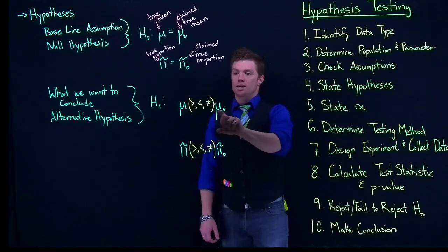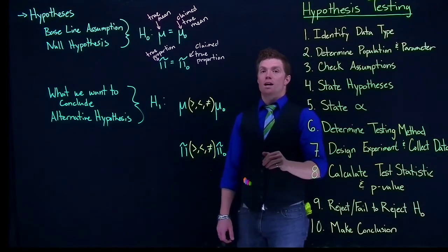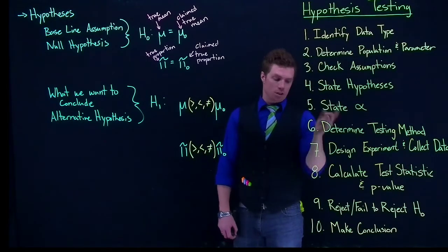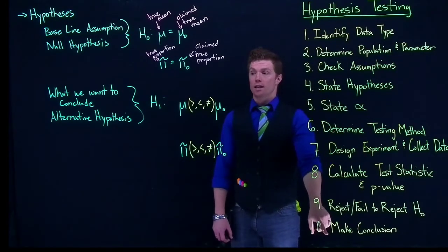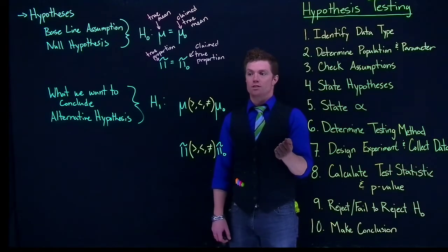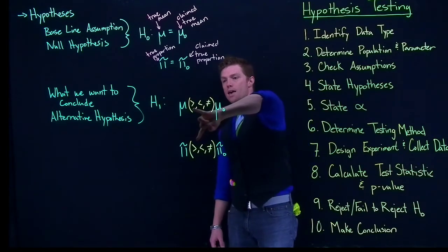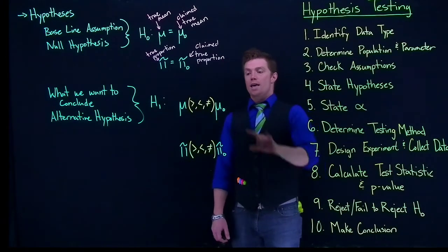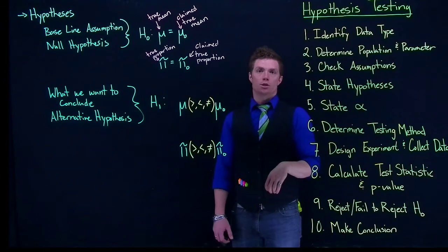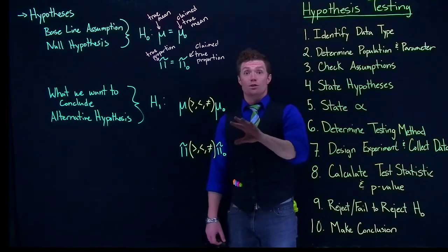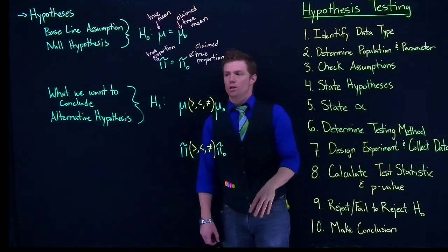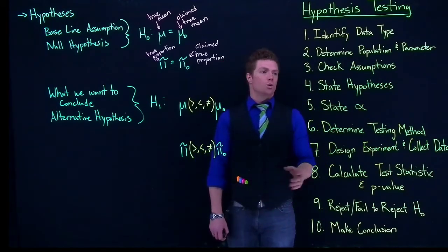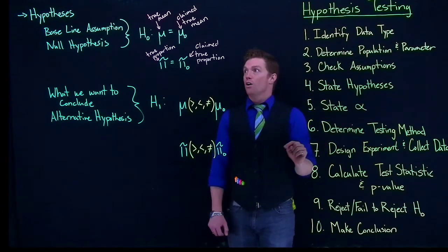And so these three different methods, they give us a slightly different version of what we do in our testing. These actually will correlate to what type of confidence interval we actually want to use at the very end. Remember how we did our one-tailed and our two-tailed confidence interval testing? Well, if we have a greater than or less than, we're going to be doing a one-tailed confidence interval. And if it's not equal to, we will be doing a two-tailed confidence interval. So that's kind of nice. We've seen this little part before, at least the inequality portion, just kind of put into a new package. So that's how we state our hypotheses.